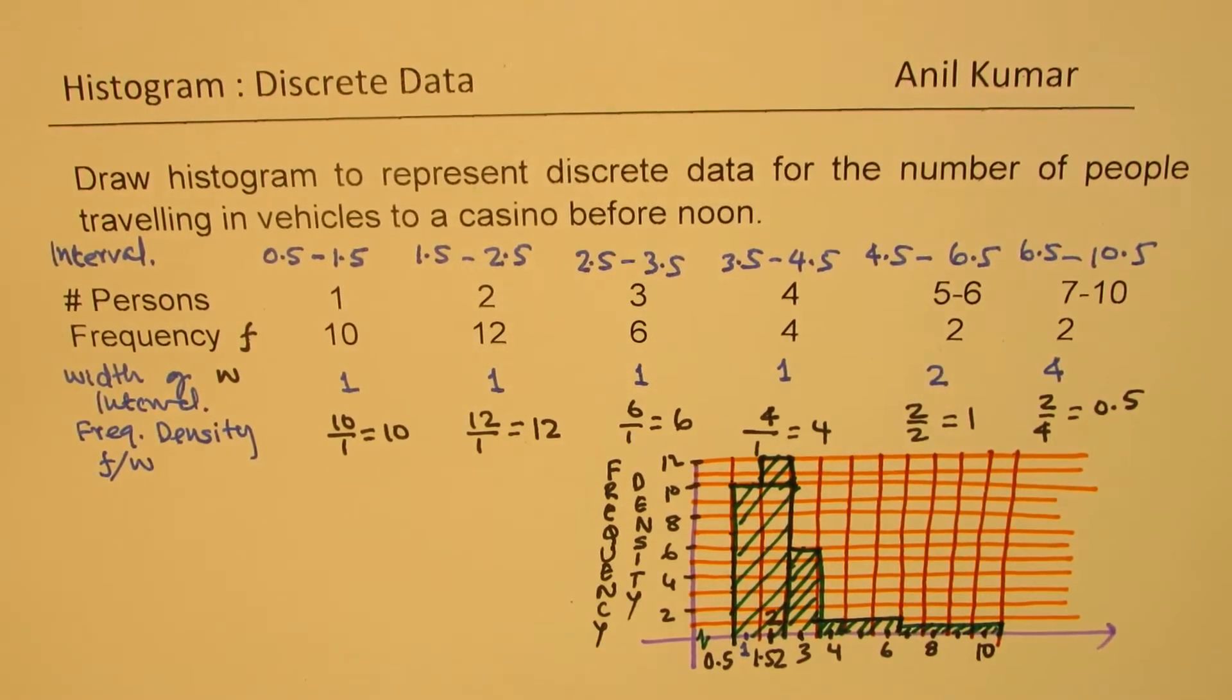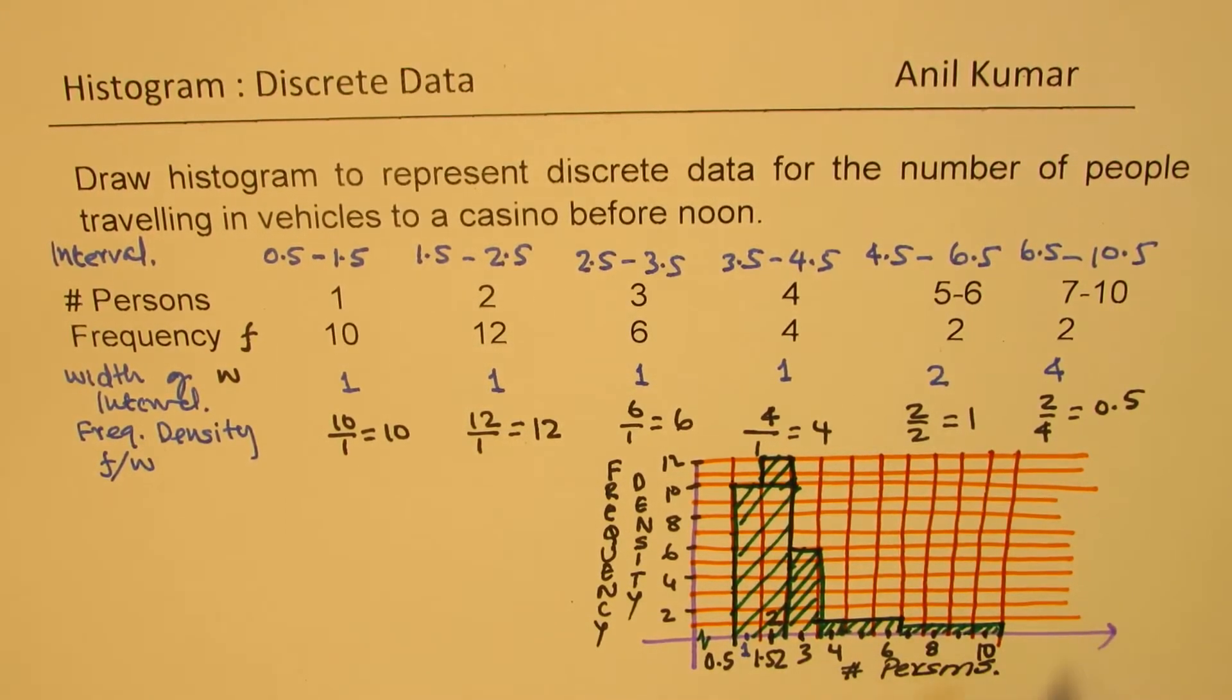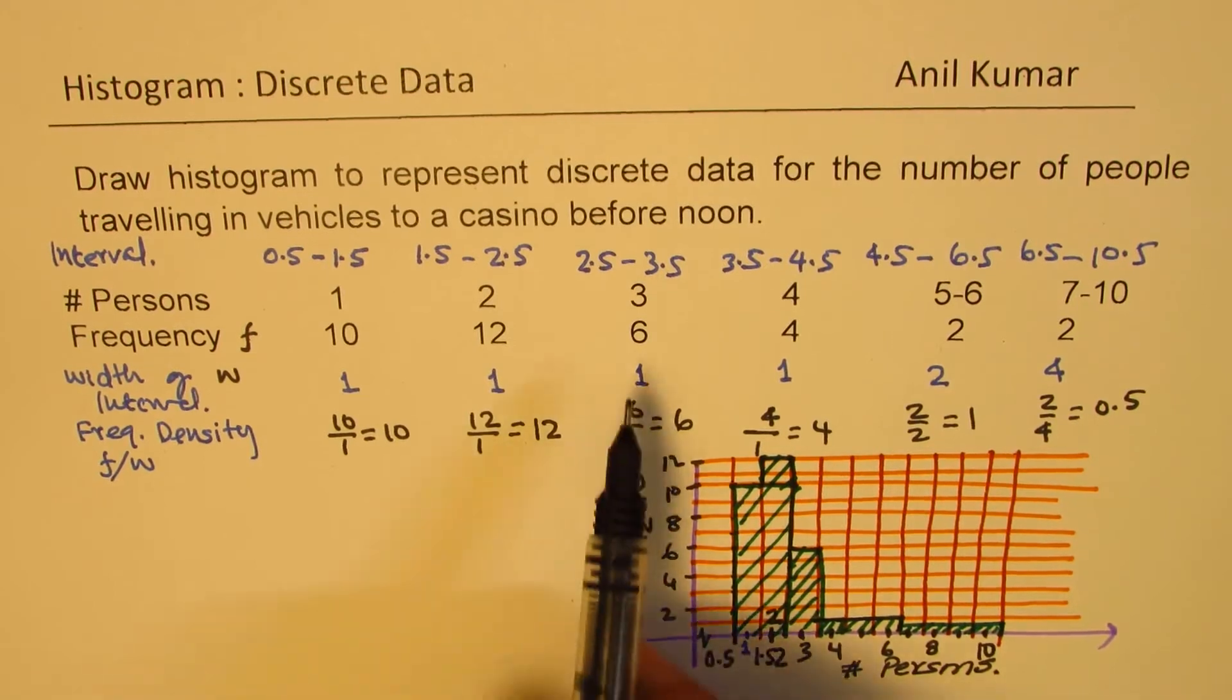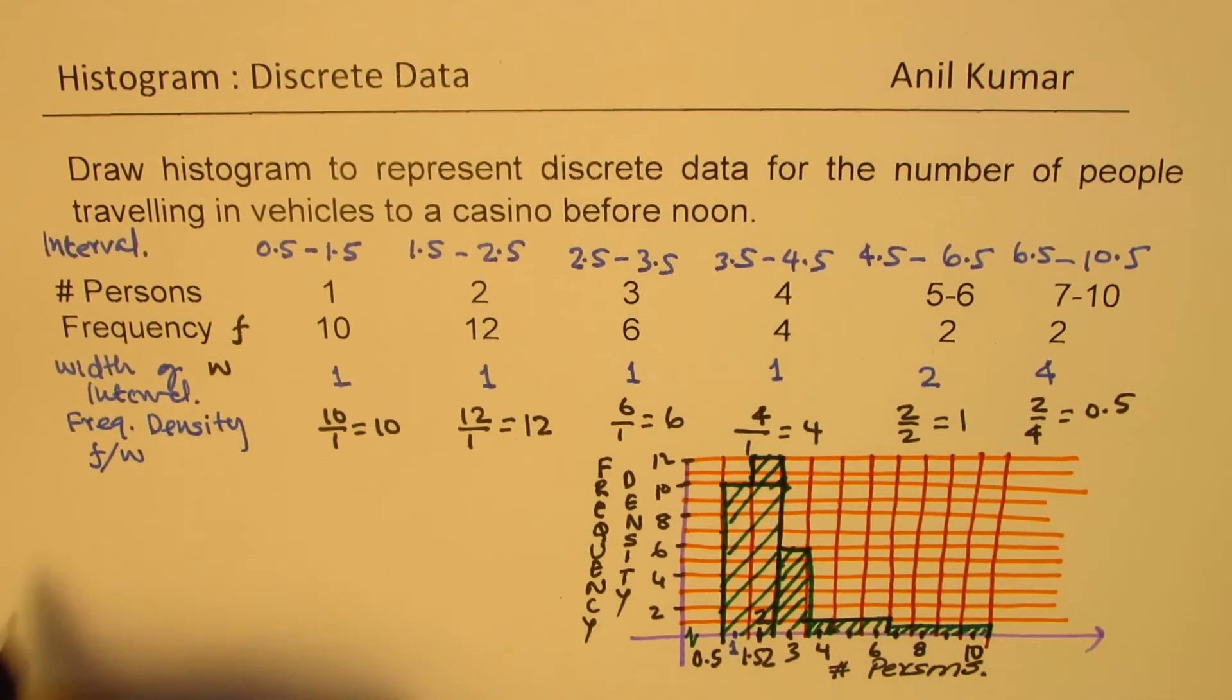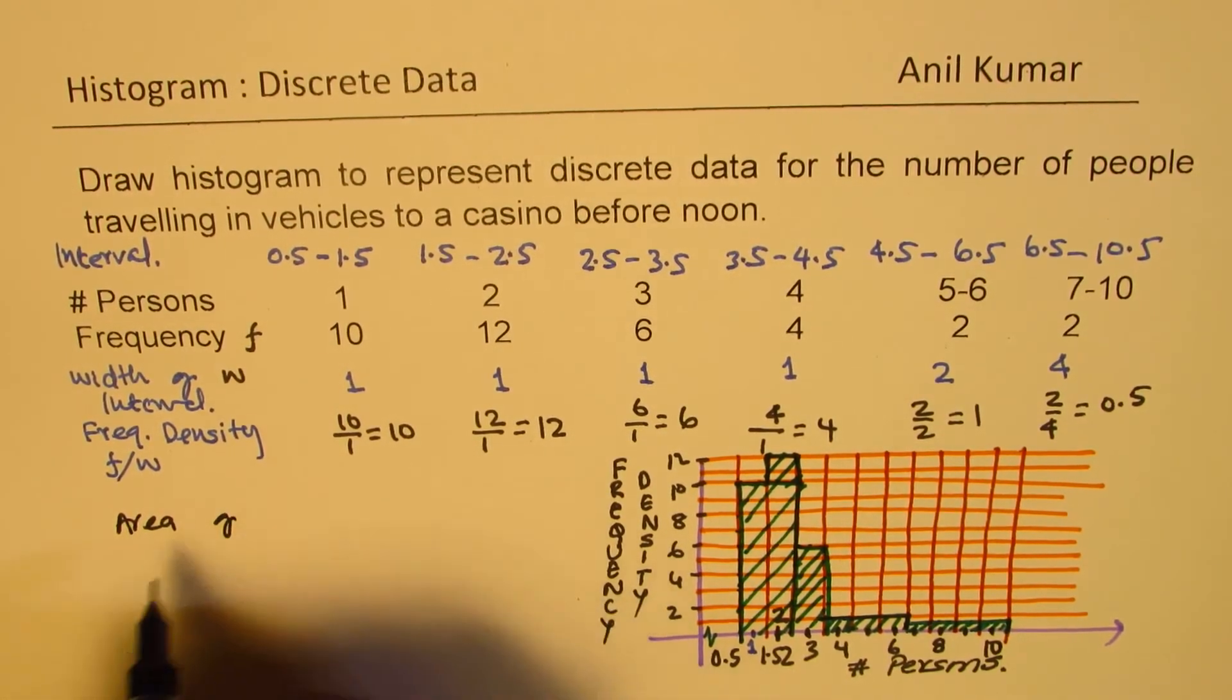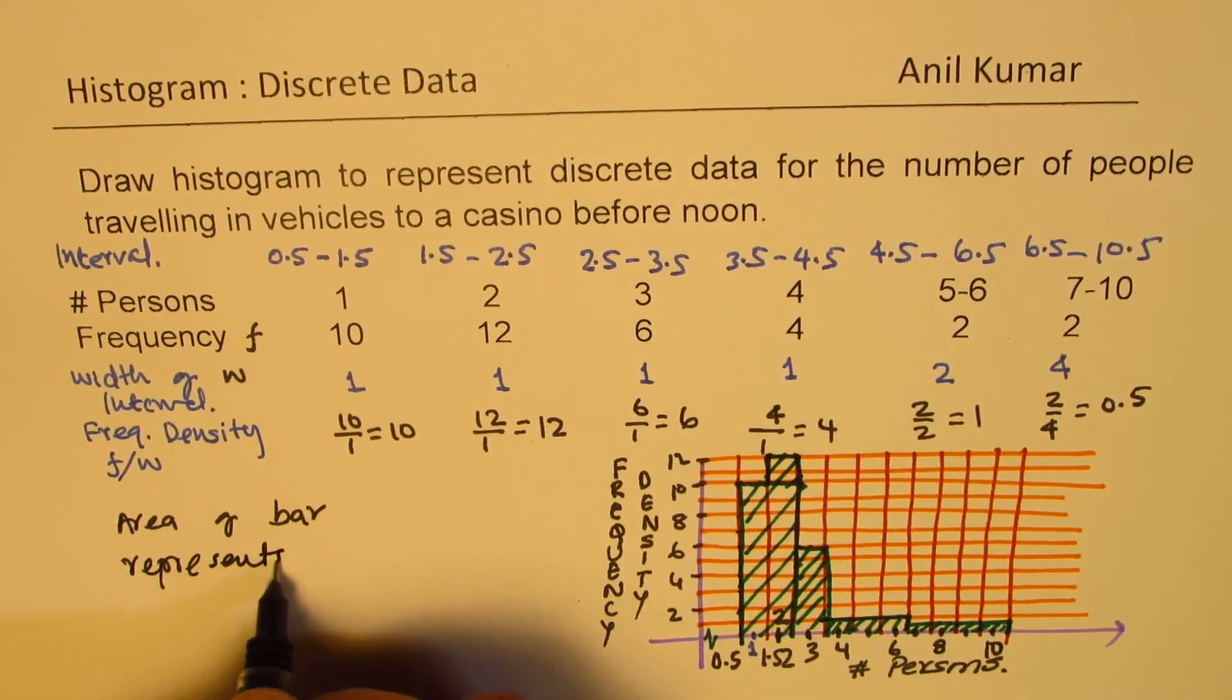So that is how we are going to sketch the histogram. And on this side, we have persons. Number of persons in each car. So number of persons is 1, we go up to 10. For 2, up to 12. For 3, up to 6. And the density is 6 here. So 6, which gives you the frequency. So area gives you the frequency. Area of bar represents frequency.